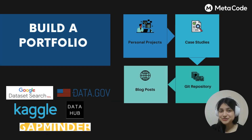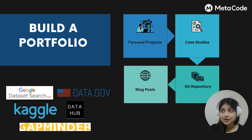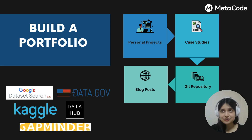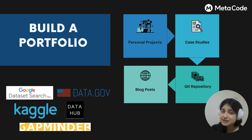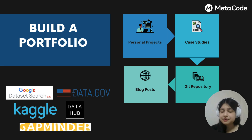Now let's talk about how to showcase your work by building a portfolio. You can do that by working on personal projects, doing case studies, and uploading them to a repository — especially GitHub, which is the most commonly used. You can also write blog posts or make your own website. In order to do all these things, you need access to datasets. There are multiple websites that provide free datasets. You can do your own research based on the type of data you want to work on.